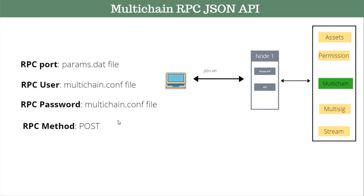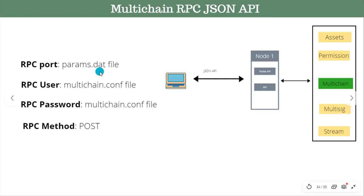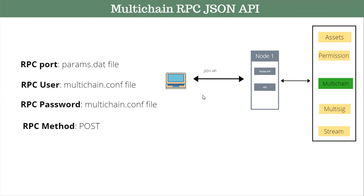Whenever you make any REST API call to MultiChain functionalities, you need to have a few things handy. This slide talks about those parameters. The very first parameter is your RPC port — you need to be aware of your MultiChain RPC port, and that information you can get from the params.dat file. I will show you in the hands-on where to locate this file and which field to refer to for the RPC port. You also need a username and password, because these APIs are not open to anyone — only authorized people can access them. These credentials can be found in the multichain.conf file.